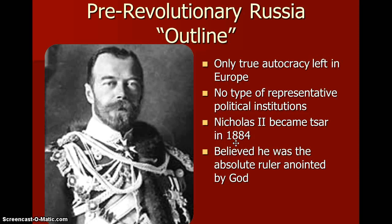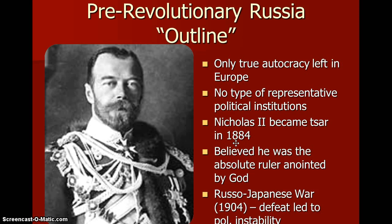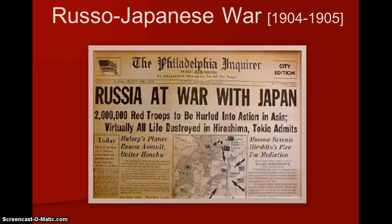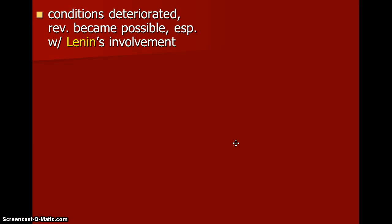There was a Russo-Japanese War in 1904, and Russia got defeated in the war, and this led to political instability. Conditions deteriorated, revolution became possible, especially with Lenin's involvement, and we're going to talk about Lenin very soon.